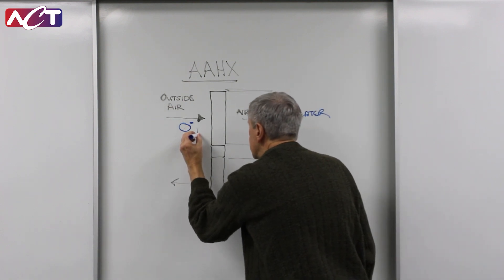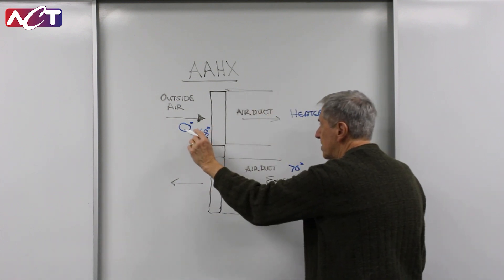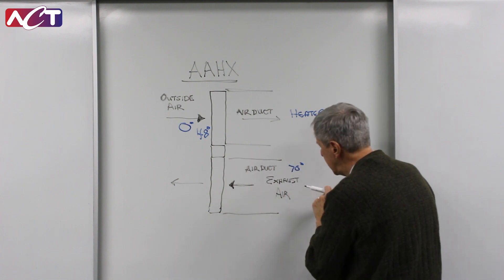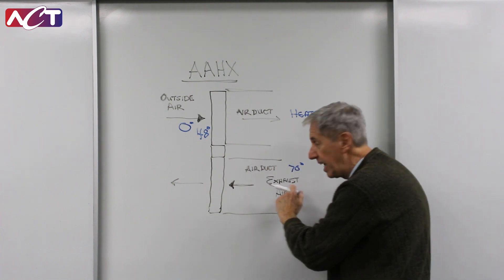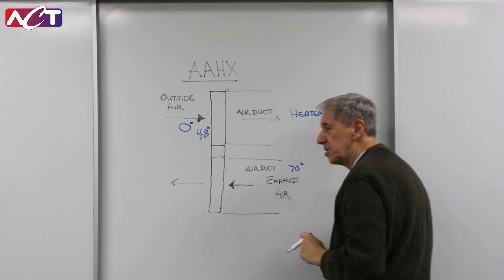So in essence, this now becomes 48 degrees instead of having to process zero degrees, simply by taking that air that left the building and utilizing it to preheat the air coming into the heater system.